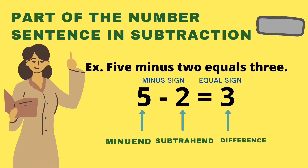What are the parts of the number sentence in subtraction? Five minus two equals three. Five is the minuend, two is the subtrahend, and three is the difference.